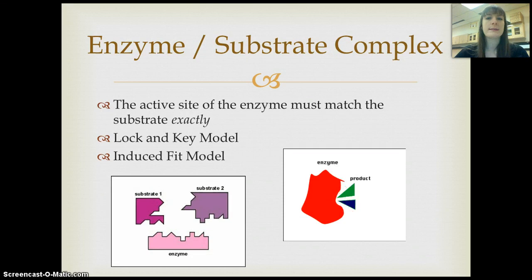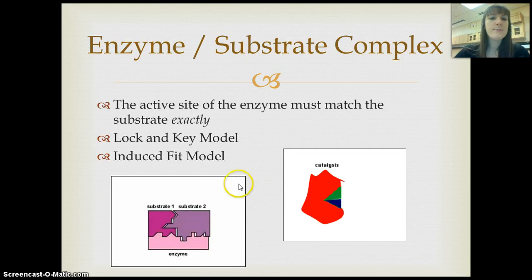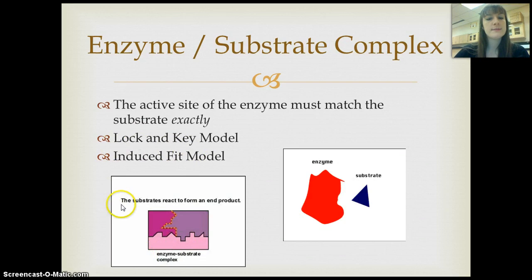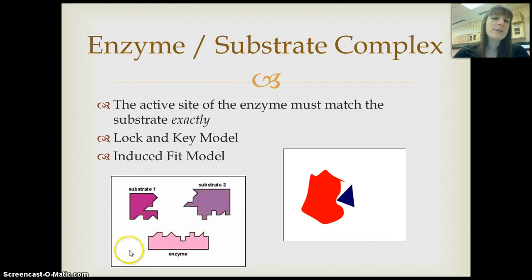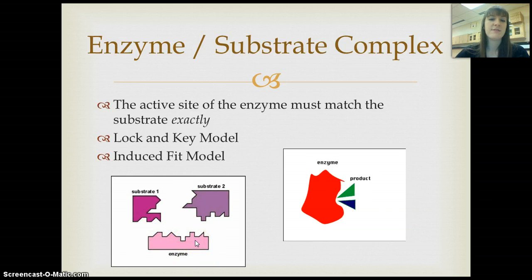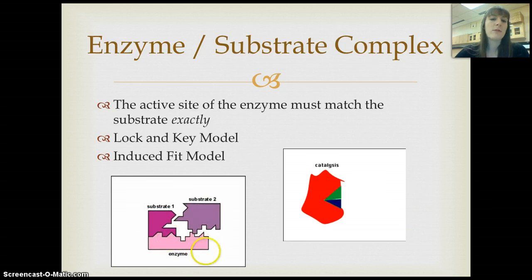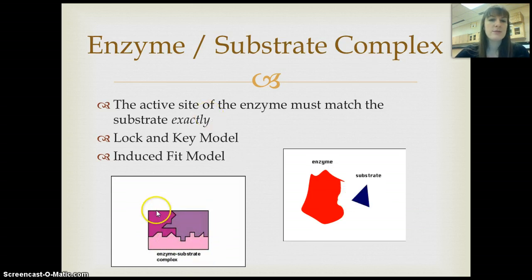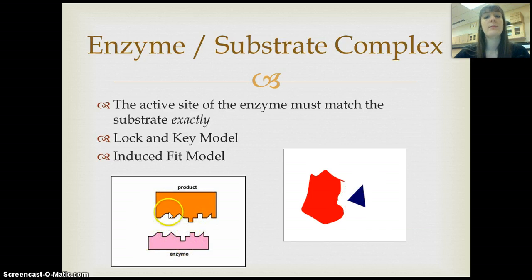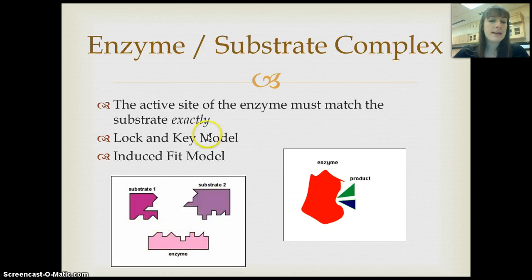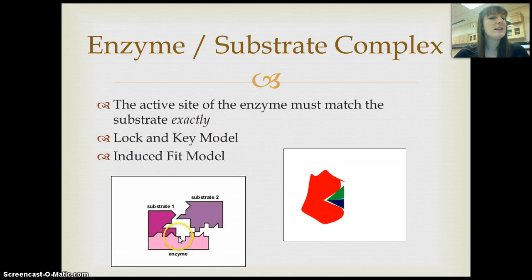There are a couple of different models that help explain that. The first is the lock and key model, represented here with these purple images. The pink part represents the enzyme with a very specific active site shape — like a puzzle piece. The two substrates, dark purple and light purple, come in and fit exactly. Once in that spot, they undergo the reaction and form the product. This is called the lock and key model because the enzyme and substrates fit into each other exactly, just like a specific key fits into a specific lock.